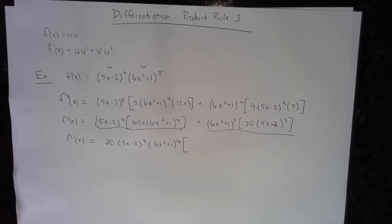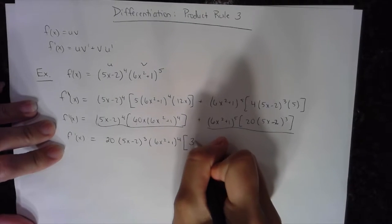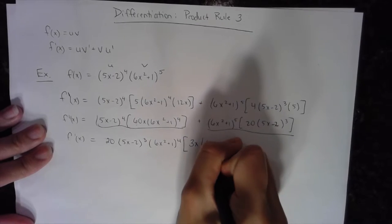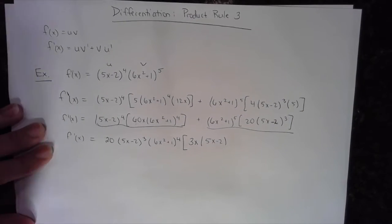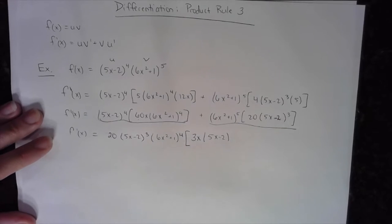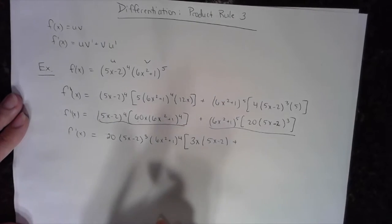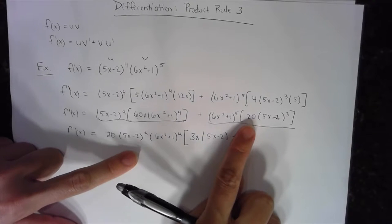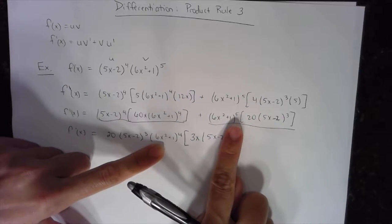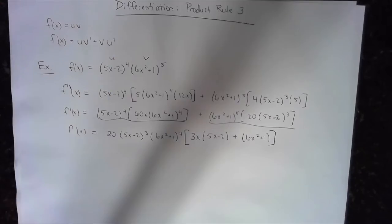So the GCF is 20(5x − 2)³(6x² + 1)⁴. What's left? I took 20 from 60, leaving 3x. I took 3 of the (5x − 2)'s and had 4, so I need one more. I took out 4 of the (6x² + 1)'s and had 4, so none remain from the first term. For the second term: I took out 3 (5x − 2)'s and had 3, so none remain. I took out 4 (6x² + 1)'s and had 5, so I need one more: (6x² + 1).